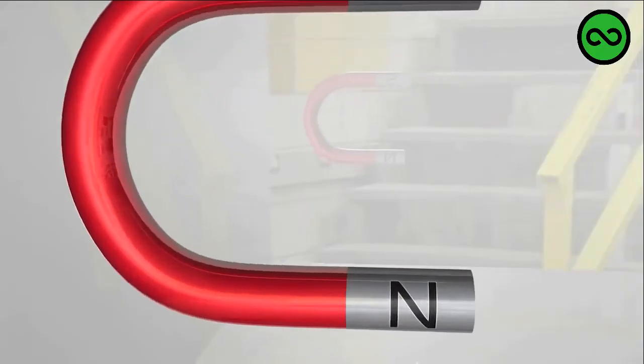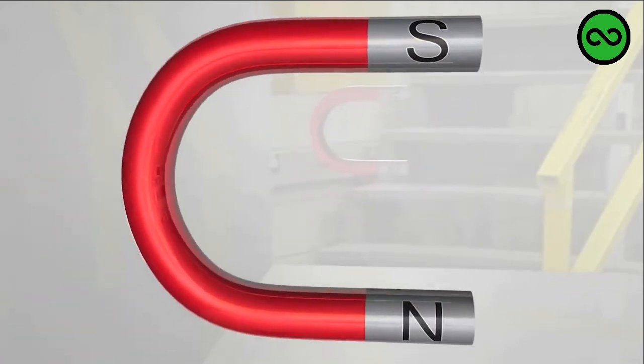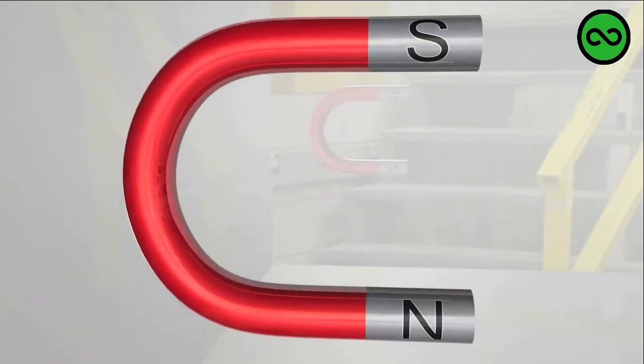Here's a horseshoe magnet with a north and south pole. The magnetic field always points from north to south as shown by the blue lines.